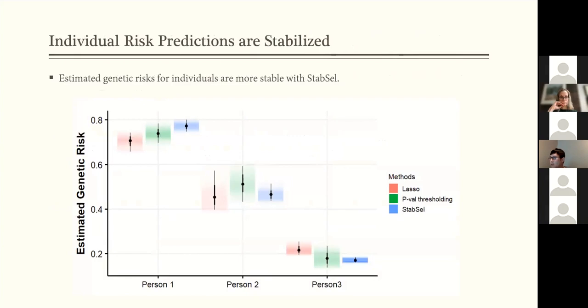And just the last note that this added stability, how this added stability manifests itself in risk predictions. So these are three randomly chosen individuals in our data set. And we can see that the variability for stability selection is much lower compared to the other two. So I think it's quite encouraging that it does provide some more stable results when there are some perturbations to the data you have.